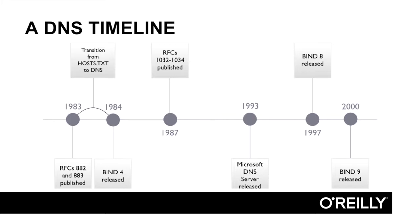The Microsoft DNS server, a popular DNS server that's bundled with Microsoft's Windows Server operating systems, came out in 1993. BIND 8, a rewritten version of BIND, came out in 1997, followed by another major overhaul, BIND 9, in 2000. And we're actually still running versions of BIND 9 on the internet today.